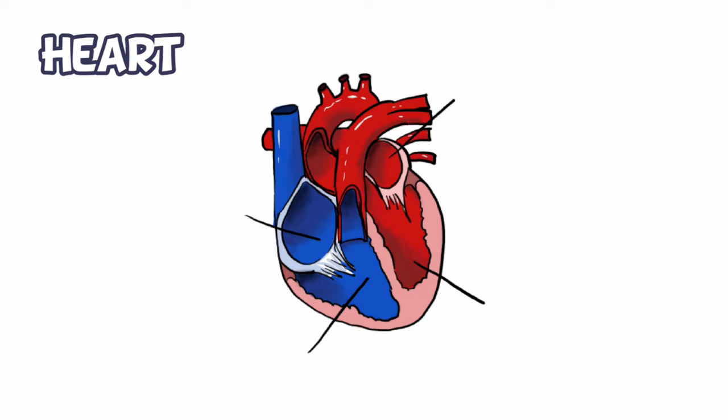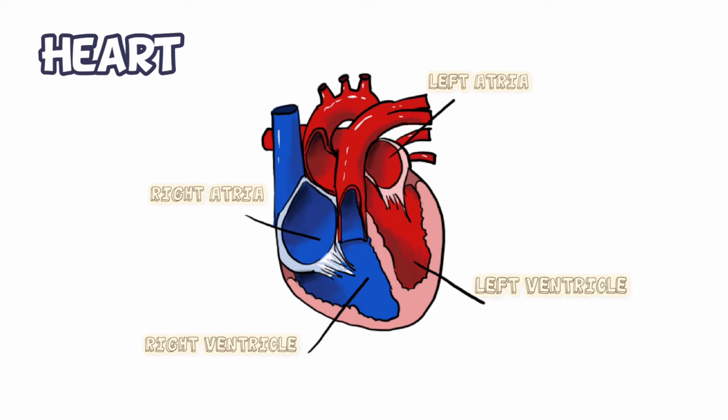The human heart, among other bird and mammal hearts, has four chambers: two relatively smaller upper chambers called atria, and two larger lower chambers called ventricles. A thin muscular wall called the inter-atrial septum separates the right and left atria, whereas the right and left ventricles are separated by a thick-walled interventricular septum.